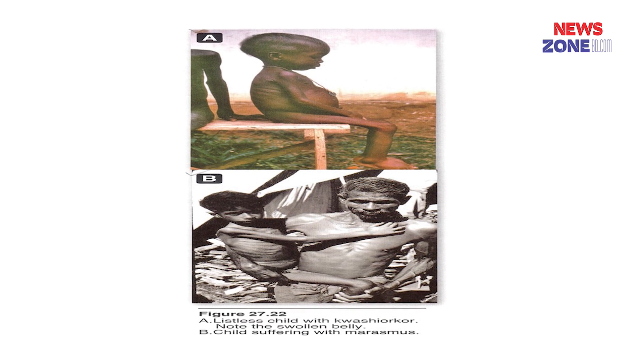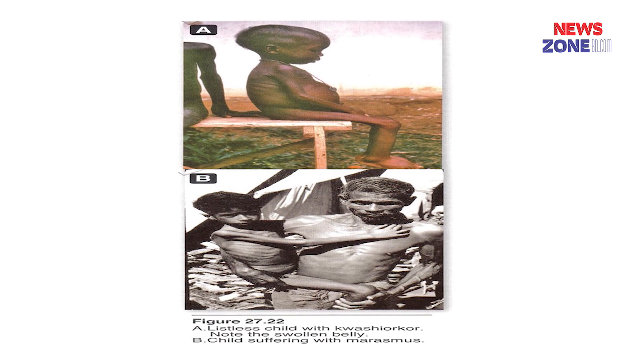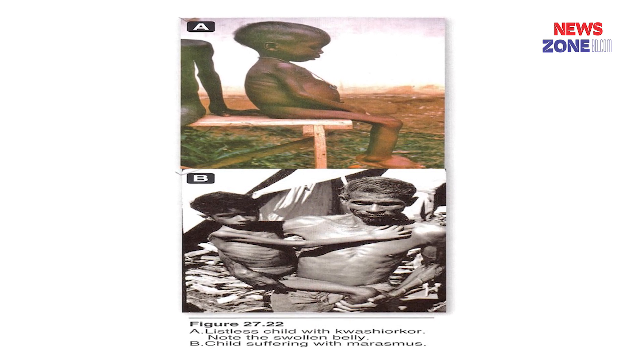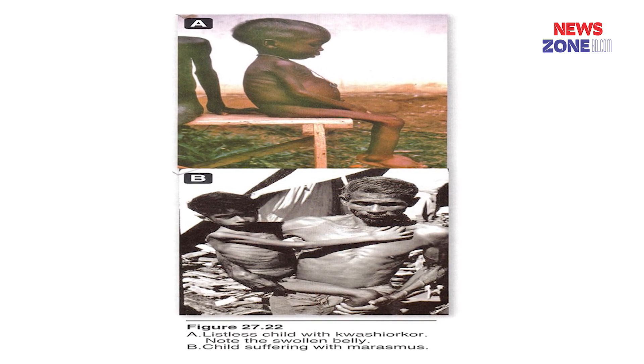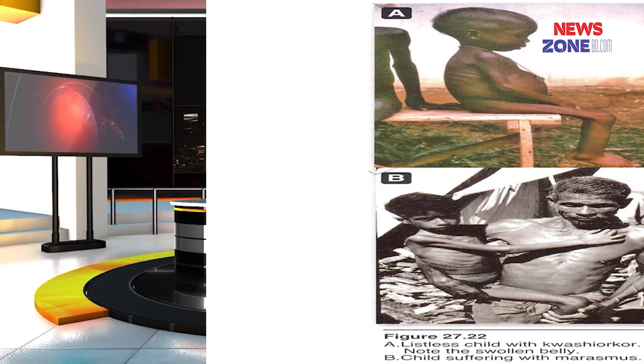Why is edema present in kwashiorkor? In kwashiorkor babies, they have low protein intake, which leads to decreased protein — meaning decreased albumin. Decreased albumin leads to decreased colloidal osmotic pressure, and that decreased colloidal osmotic pressure causes excess water to come out of the blood vessels and accumulate in the interstitial space, leading to edema.